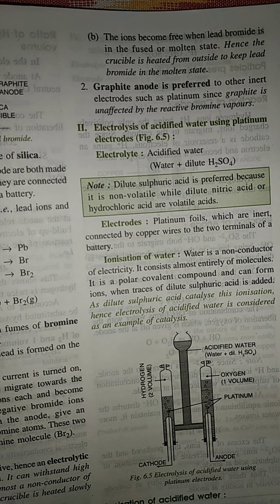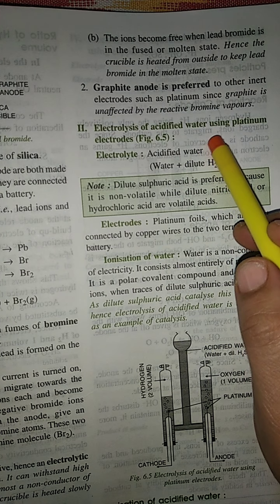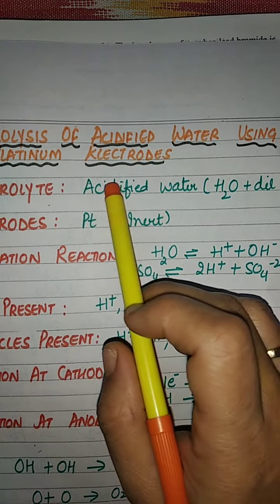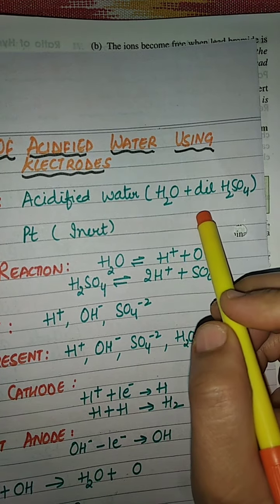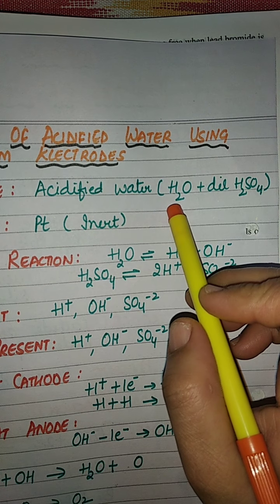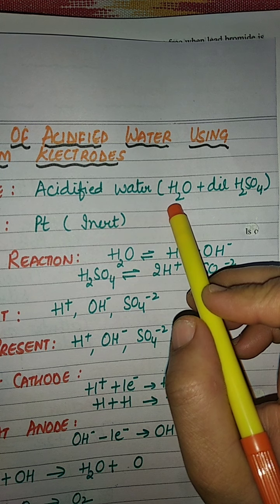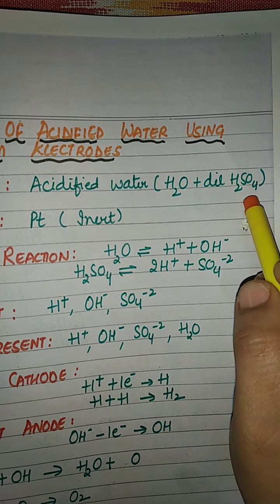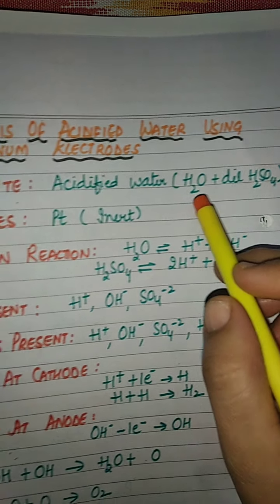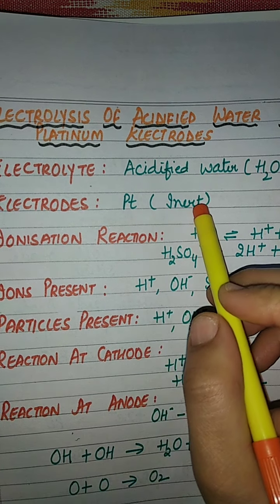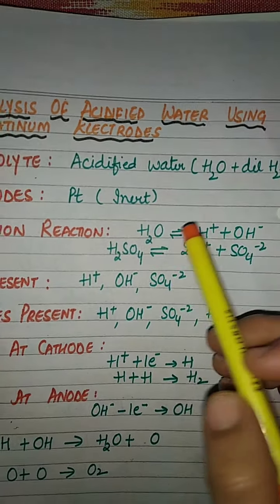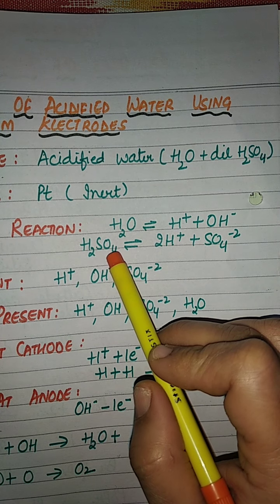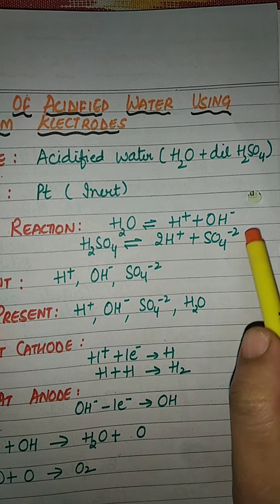The second example is electrolysis of acidified water using platinum as electrodes. The electrolyte used is acidified water, which means water plus dilute sulfuric acid. Pure water is a bad conductor of electricity and does not conduct current, so a little amount of sulfuric acid is added — sulfuric acid behaves as a catalyst and increases the conductivity of water. Electrodes are made up of platinum, that is, inert electrodes. Ionization reaction: water dissociates to give H⁺ and OH⁻, and sulfuric acid dissociates to give H⁺ and SO₄²⁻.